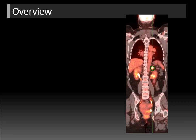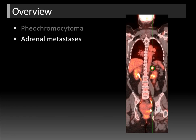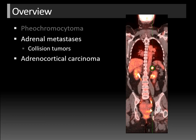To give you an overview of the lecture: pheochromocytoma is a potentially malignant mass of the adrenal gland — 10% are malignant, and we discussed that in a separate lecture. In this lecture, I'll talk about adrenal metastases, including the fabled collision tumor, and also adrenal cortical carcinoma and adrenal lymphoma.